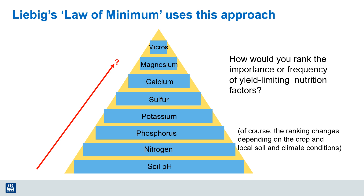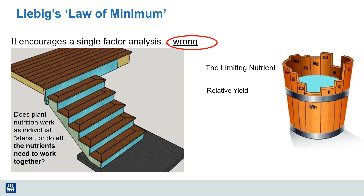Can I tell you that I think this whole approach is wrong? It doesn't tell the entire story. Do plants really respond to individual nutrients? Well, of course not. They are all required in balance — they need to work together to achieve satisfactory results. It's certainly not a stair-step approach where we take care of one nutrient at a time, but it's the entire package for them to work together.